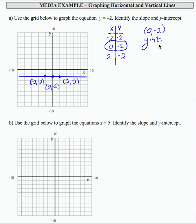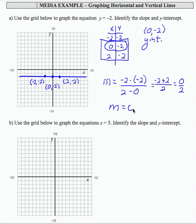To identify the slope, you might remember that a horizontal line has 0 slope, but you might not. So let's use a couple of ordered pairs and use the slope formula. So I'm going to use these two ordered pairs. So the change in output is negative 2 minus negative 2 over change in input 2 minus 0. Negative 2 minus negative 2 is negative 2 plus 2 over the denominator of 2. So that's 0 over 2. My slope is 0. And that's going to be the case for any horizontal line.